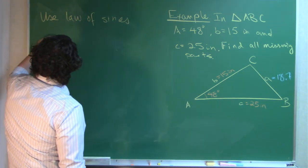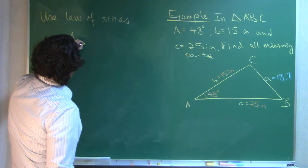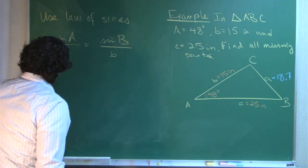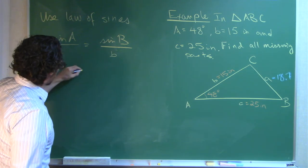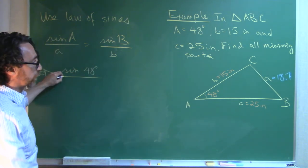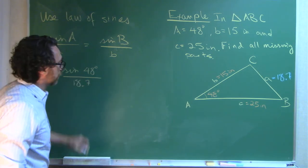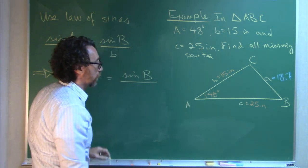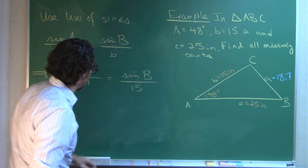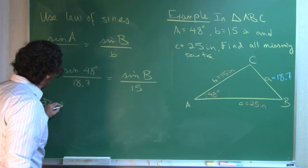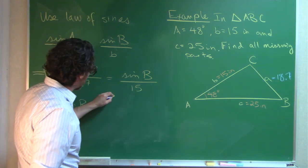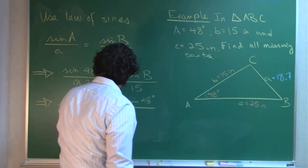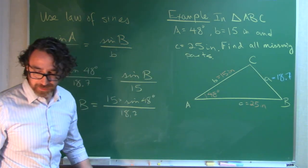We'll use this one: sine of angle A over side A equals sine B over side B. Given the information that we know, this says that sine 48 degrees over the length of side A, which is 18.7, should be equal to sine B, that's an unknown, but side B is known. So, sine B equals 15 times sine 48 degrees over 18.7.